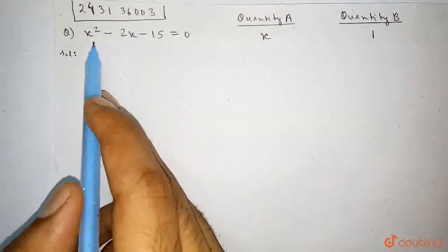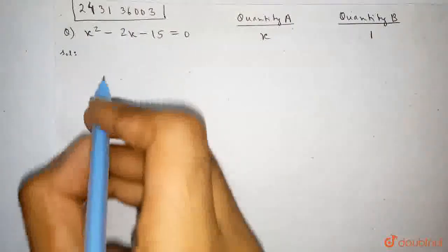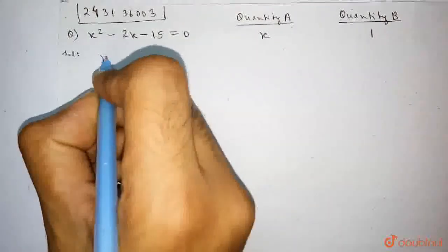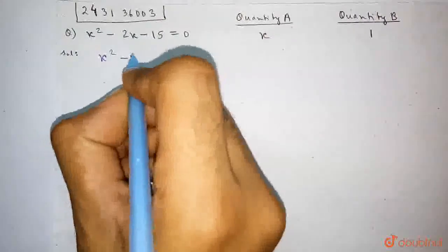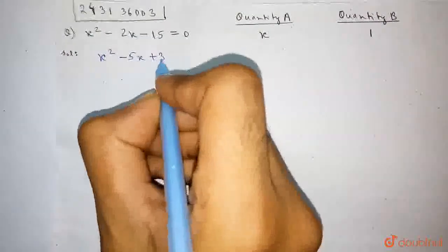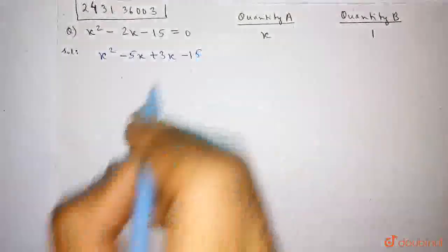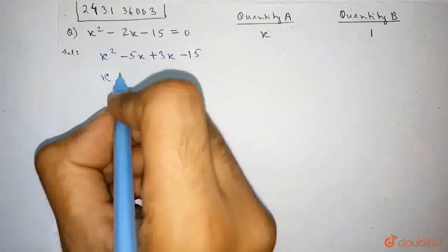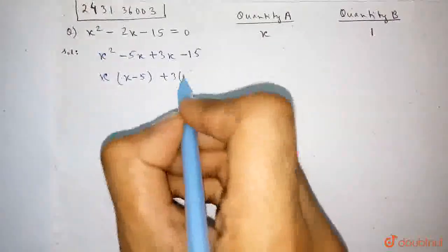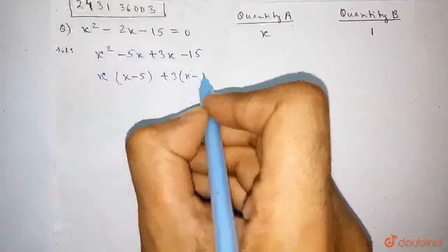Let's solve the given equation: x square minus 2x minus 15. We can write it as x square minus 5x plus 3x minus 15. Now, taking x as common, x minus 5, plus taking 3 as common, x minus 5.